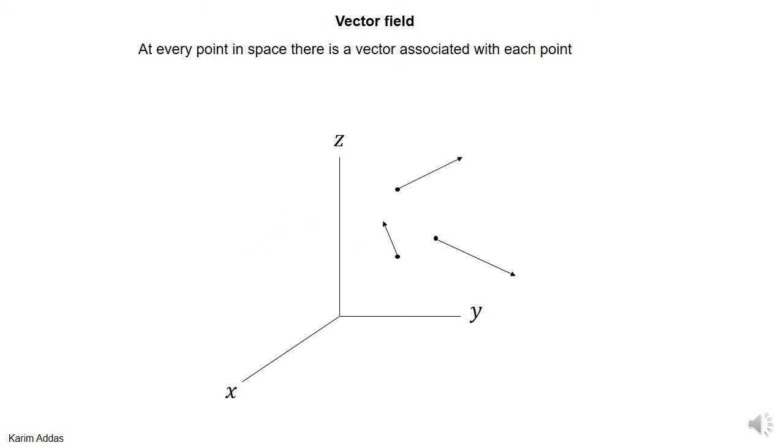Can you think of a physical quantity that is defined at every point in space and it's a vector quantity?